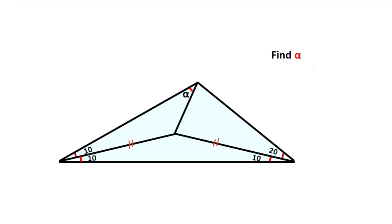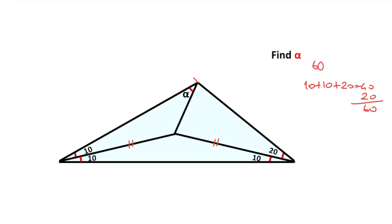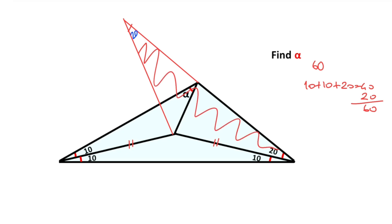All angles of an equilateral triangle are 60 degrees. Notice that some of these angles sum to 10 plus 10 plus 20, which equals 40 degrees. Therefore, if we find one more 20 degrees, we can reach 60 degrees. So if we create an isosceles triangle with base angles of 20 degrees, we can reach 60 degrees.